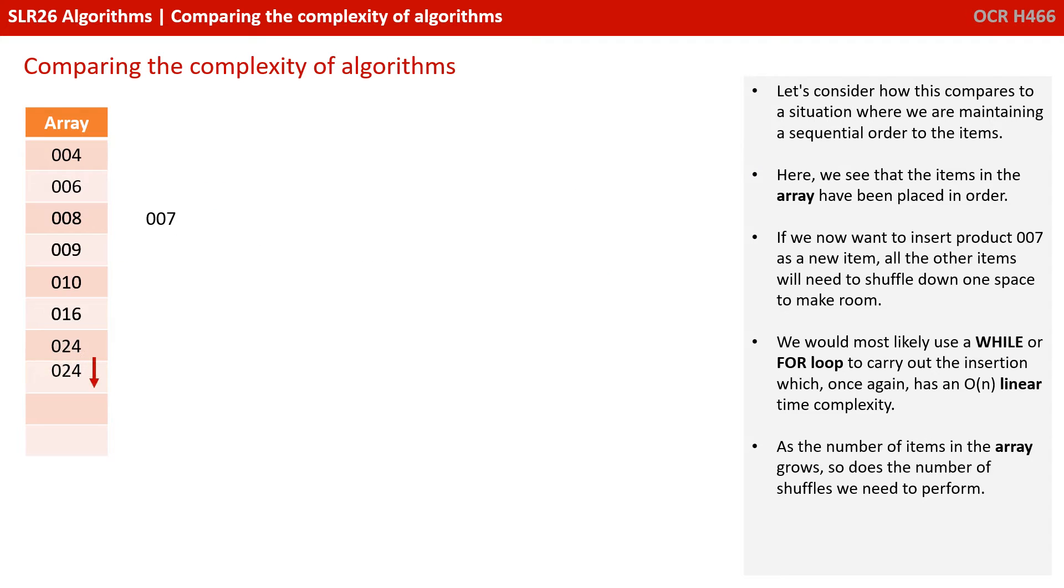Let's consider how this compares to a situation where we're maintaining a sequential order to the items. Here we see that the items in the array have been placed in order. We now want to insert product 007 as a new item. All the other items will need to shuffle down one space to make room. We would most likely use a while or for loop to carry out the insertion, which once again has an O(n) linear time complexity. As the number of items in the array grows, so does the number of shuffles we need to perform.